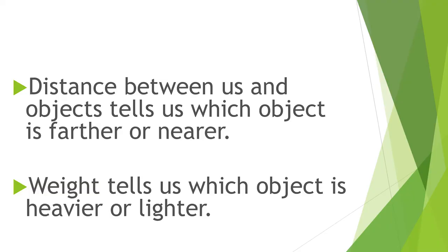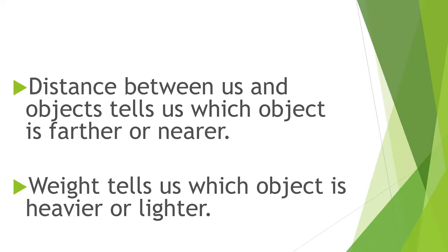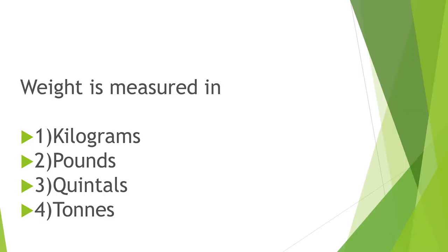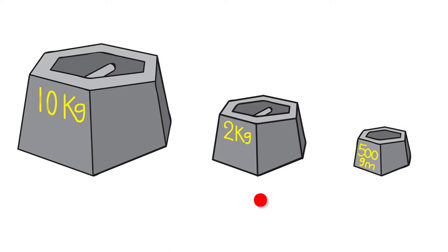So what is this weight? Weight is something which tells us which object is heavier or lighter. Just like distance is measured in meters, centimeters, and kilometers, weight can also be measured using different units. Some of the units are kilograms, pounds, quintals, and tons. Normally we see kg, that is kilogram. You can see some weights — the exact amount of weight is written on them: 10 kg, 2 kg, 500 grams. These are the weights we normally see in our daily life.